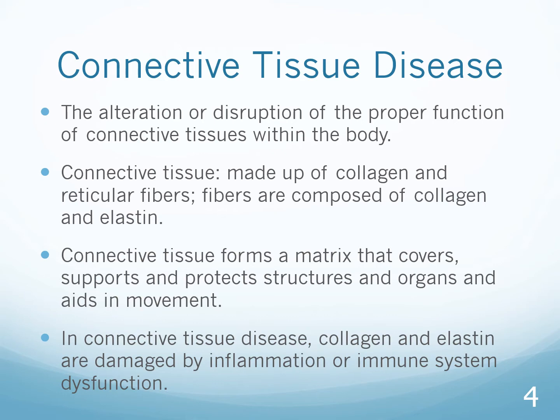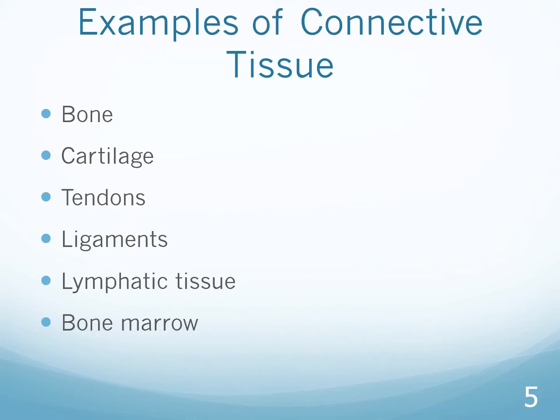In connective tissue disease, collagen and elastin are damaged by inflammation or by immune system dysfunction. We are thinking about the immune system because this can play a part in connective tissue diseases, and inflammation triggers are what we are referring to. Some examples of connective tissue are bone, cartilage, tendons, ligaments, lymphatic tissue, and bone marrow.